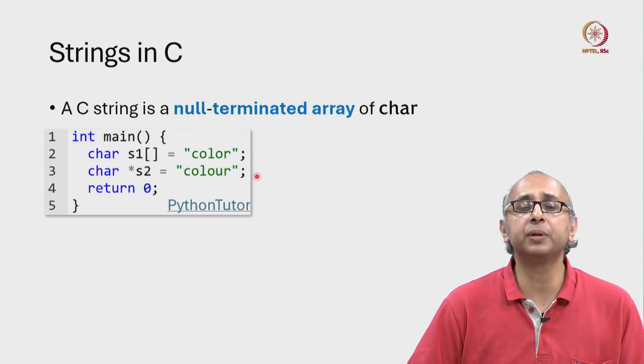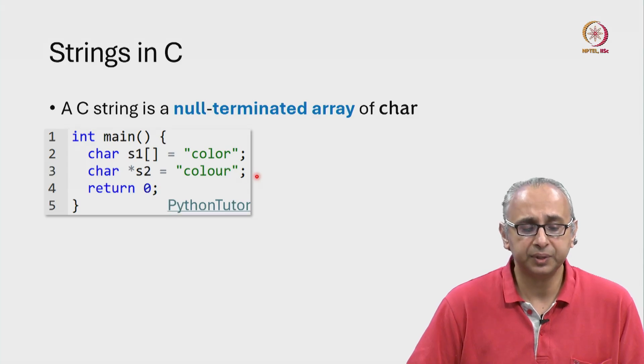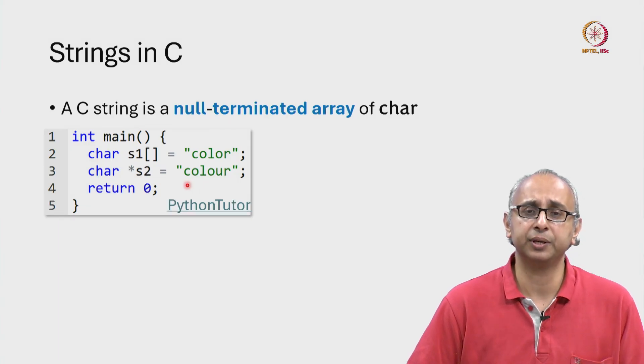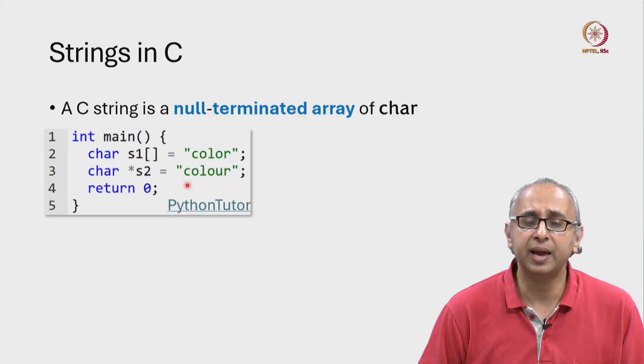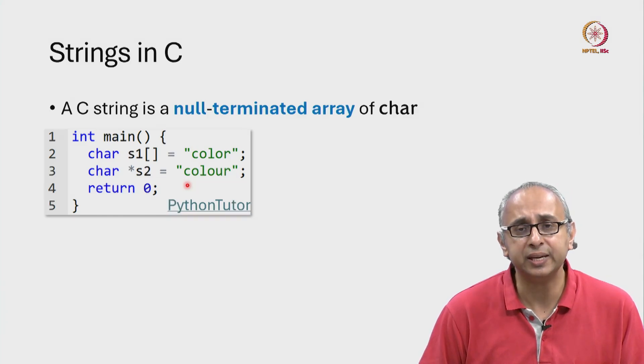Here is a simple C program. It doesn't print anything. It just simply declares what looks like two strings and then it returns zero. Let's understand what these strings S1 and S2 really are.